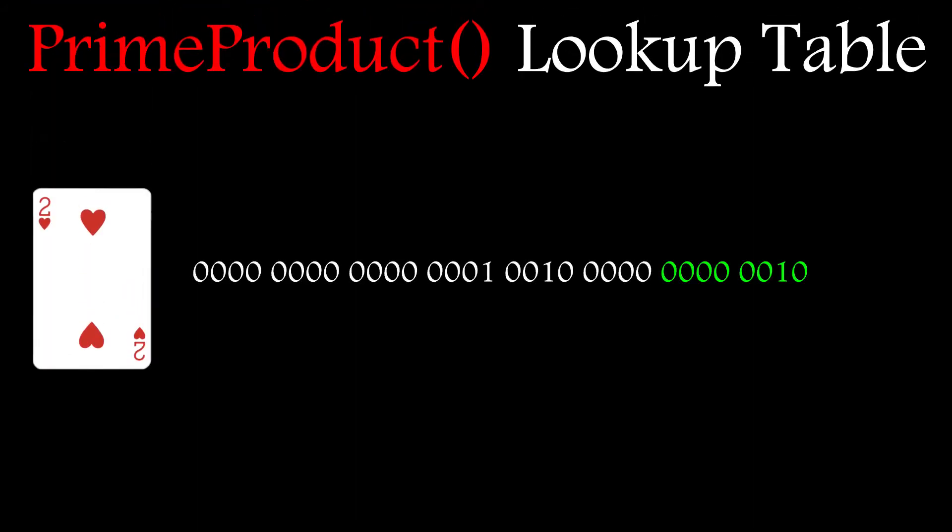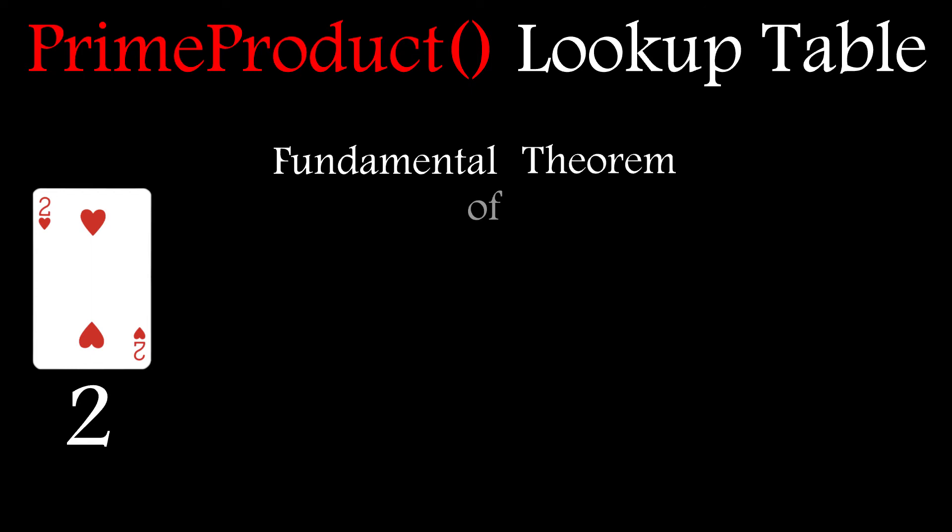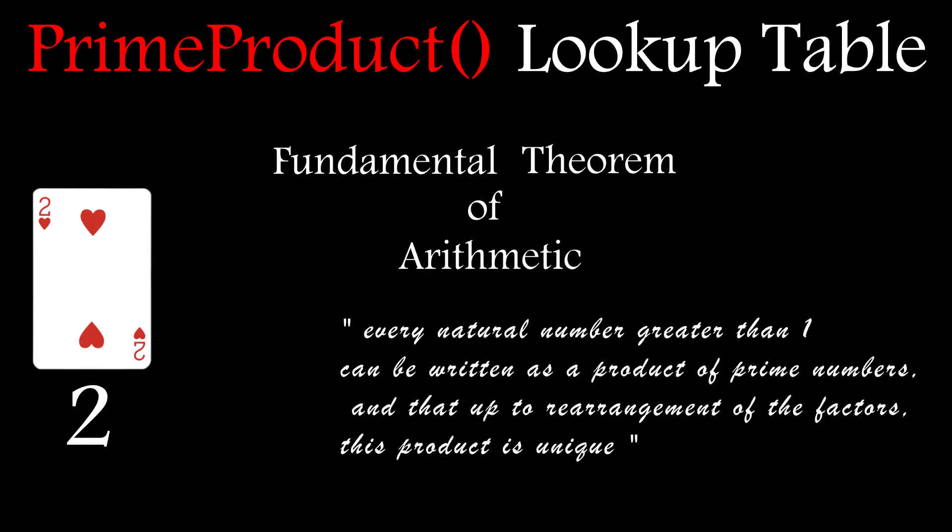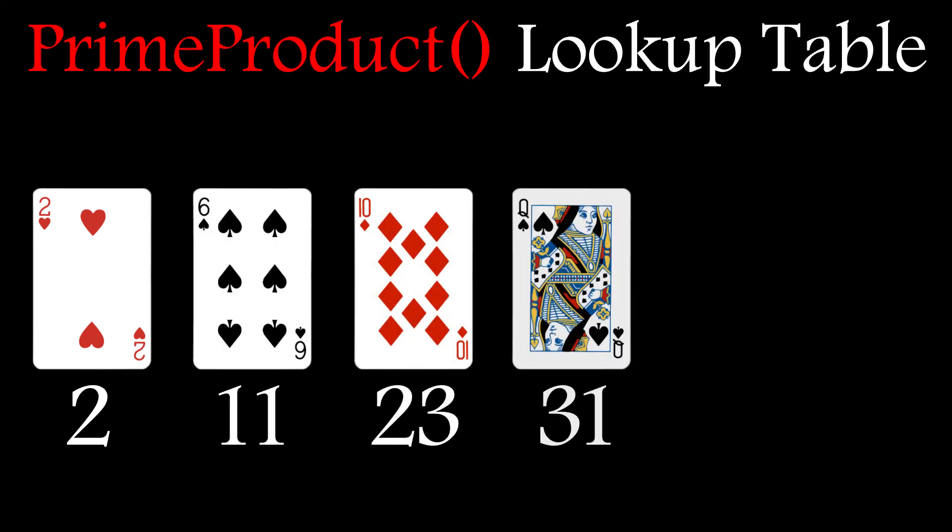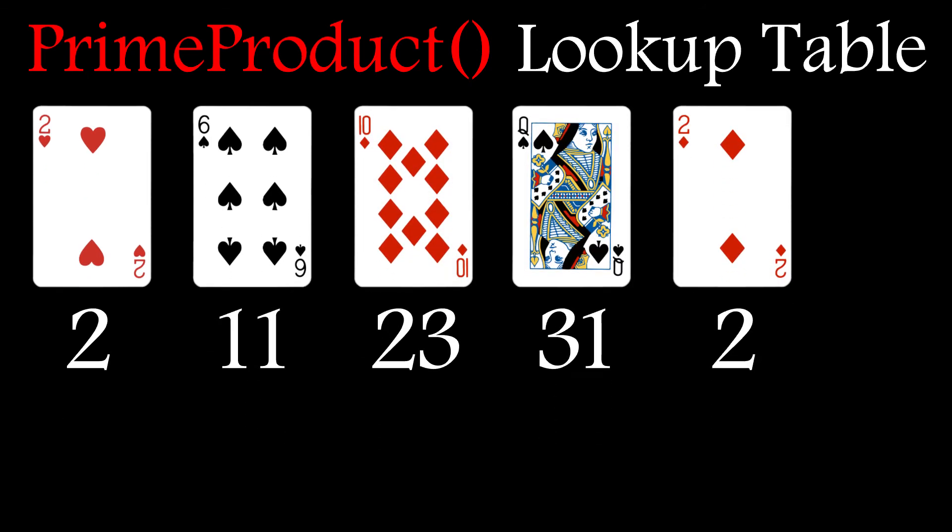This is where we make use of the prime number attached to each card in the deck. Cactus Kev recognized that as the product of any set of primes is unique, he could use it to define any poker hand in the deck. Multiplying them together gives an order independent reference number.